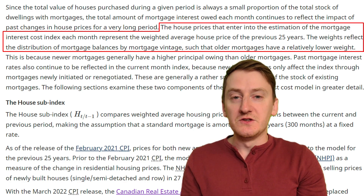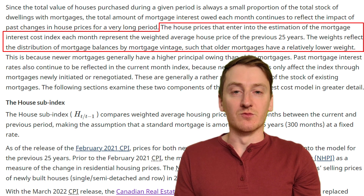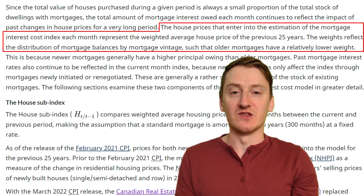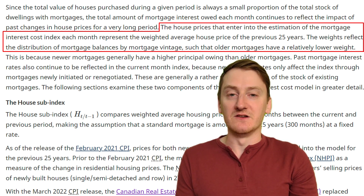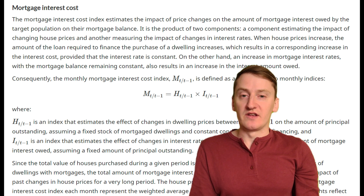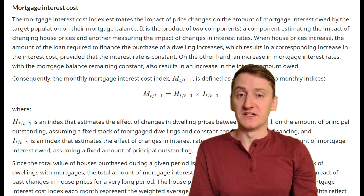But wait, there's more! The home price used in this calculation isn't the price of a home today. Because the typical length of a mortgage in Canada is 25 years and they're trying to account for the overall cost of mortgage interest, the home price they use in this calculation is an aggregate of the home prices over the last 25 years, weighted by how much of their mortgage they have left to pay off. So while someone who bought a house recently might be struggling with their mortgage payments, they're offsetting the calculation by people who bought 10 or 15 years ago, or even people who bought a house all the way back in 1999 for 15 cents! So decreases in the interest rate can quickly make housing appear a lot more affordable in the CPI, even when it's getting a lot more expensive today.